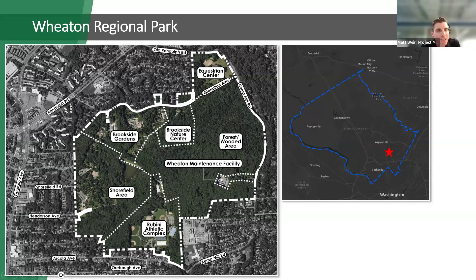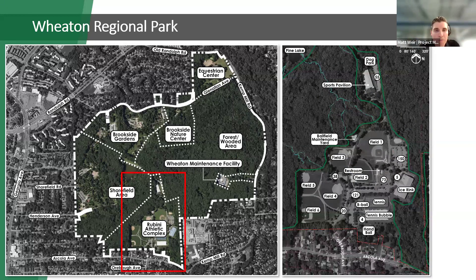200,000 people live within two miles of the park, making this a major destination not just for those residents but for people coming throughout Montgomery County. Tonight we're going to focus on the Rubini Athletic Complex, which is the hub in Wheaton Regional Park for all things active recreation — baseball fields, softball fields, ice skating, a dog park, tennis and basketball courts, the tennis bubble, and lots of parking.